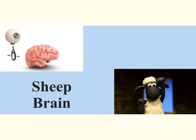Before we begin the dissection of the sheep brain, we first need to review some of the terminology that will be used: anterior, posterior, lateral, medial, dorsal, ventral. If you're unsure of any of these terms, stop now and review that terminology before you continue.